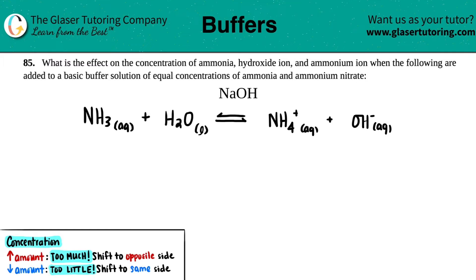Number 85: what is the effect on the concentration of ammonia, hydroxide ion, and the ammonium ion when the following are added to a basic buffer solution of equal concentrations of ammonia and ammonium nitrate? We're adding NaOH.